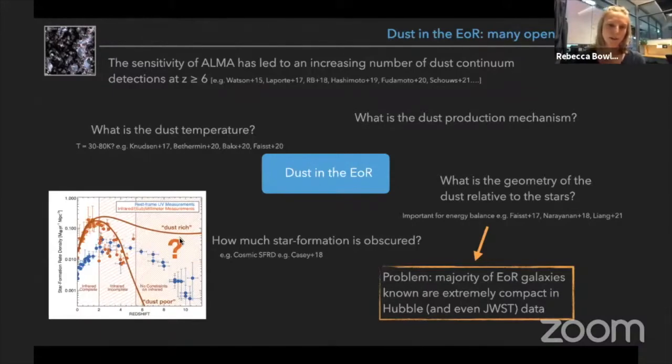And this is a nice plot from Caitlin Casey's work which shows you some of the huge uncertainties we have in this high redshift universe when considering the cosmic star formation rate density, and this is due to our unknown dust properties.